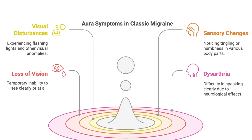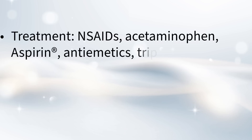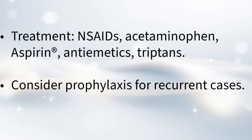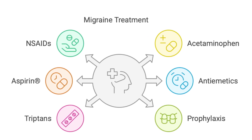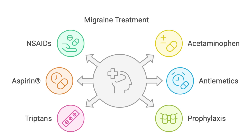It's probably pretty freaky if you've never experienced it. For acute treatment when the migraine's actually happening, the guide lists NSAIDs like ibuprofen or naproxen, acetaminophen, aspirin, and antiemetics to help with the nausea. There's also a specific type of drug called triptans that can be really good at stopping migraine pain. And if you get migraines all the time, it might be worth talking to your doctor about preventative treatment — what they call prophylaxis.